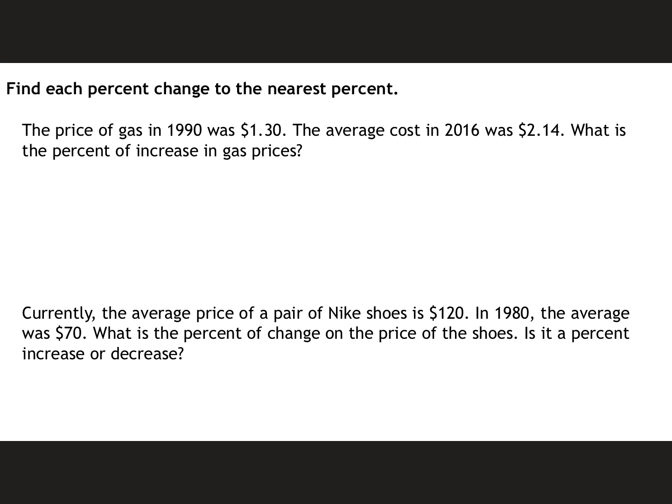So here's how we're going to go about finding this. Find each percent of change to the nearest percent. So the price of gas in 1990 was $1.30. The average cost in 2016 was $2.14. What is the percent of increase in the gas prices? So what I'm going to do is I'm going to find how much it's changed over time. So to do that I'm going to take the higher amount, that $2.14, and I'm going to subtract it from the lower amount. And then whatever I get from that I'm going to divide from the original. And the original is always the first one, the oldest time, which in this case would be the one in 1990.